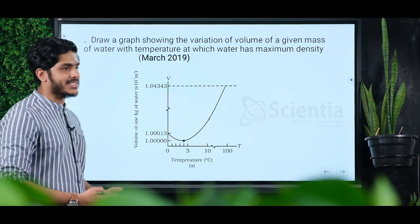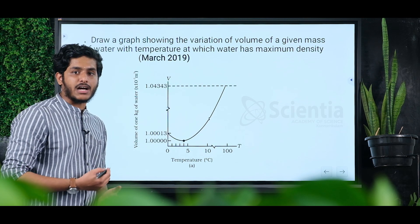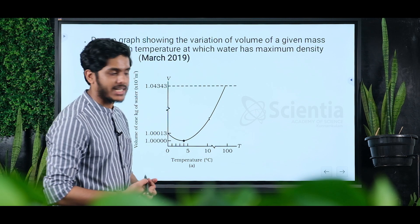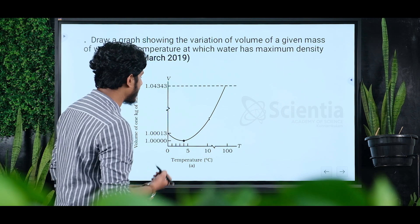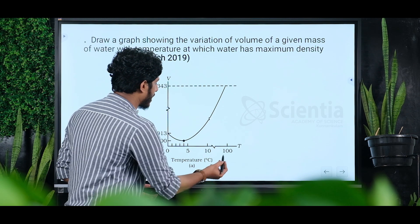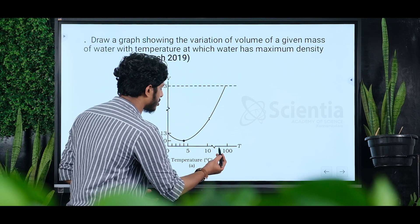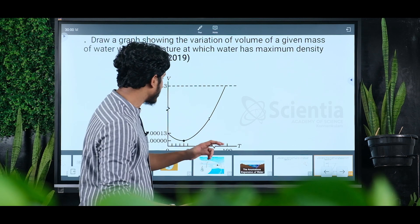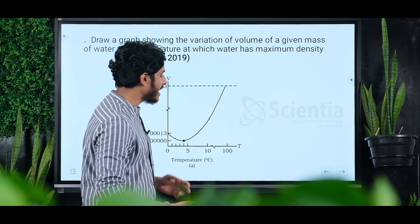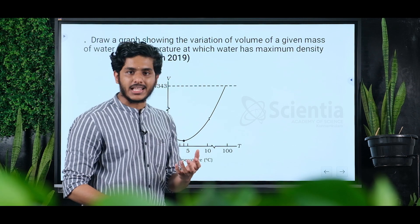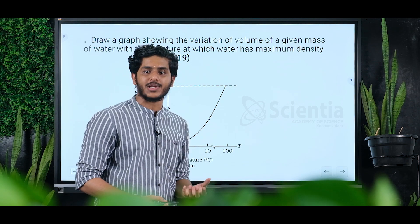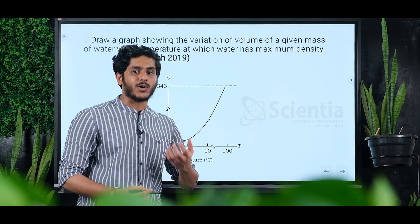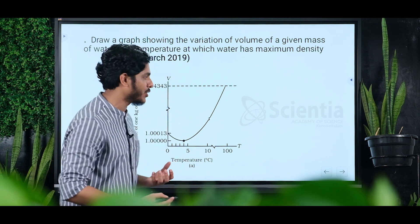Volume and temperature — this is the temperature graph. In ordinary conditions, for any liquid, as temperature decreases, contraction occurs — meaning volume decreases.